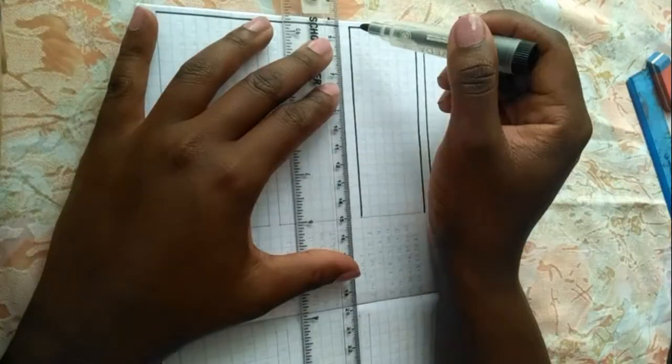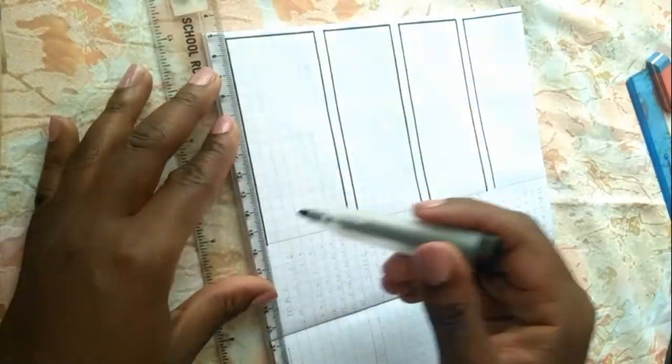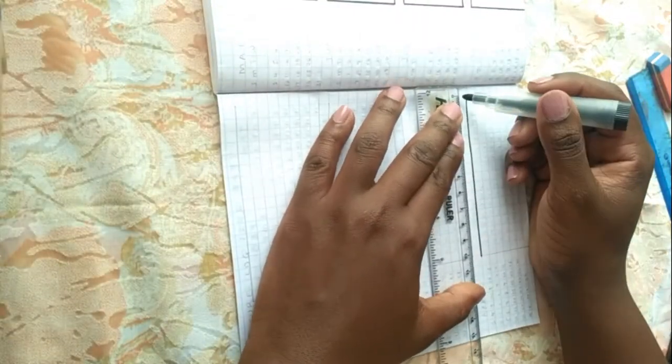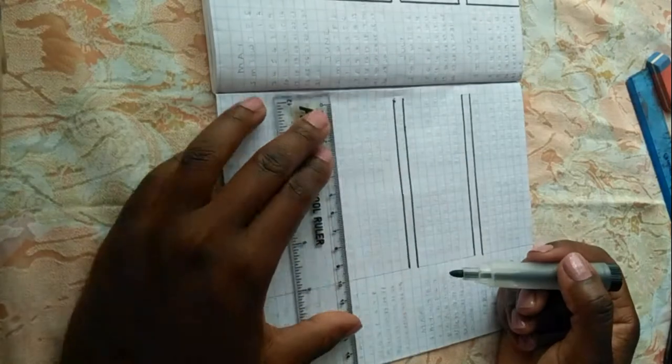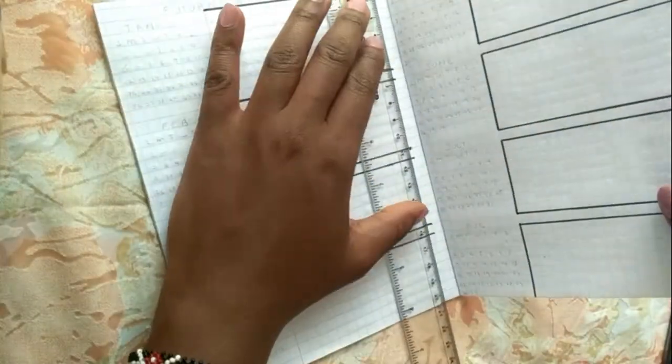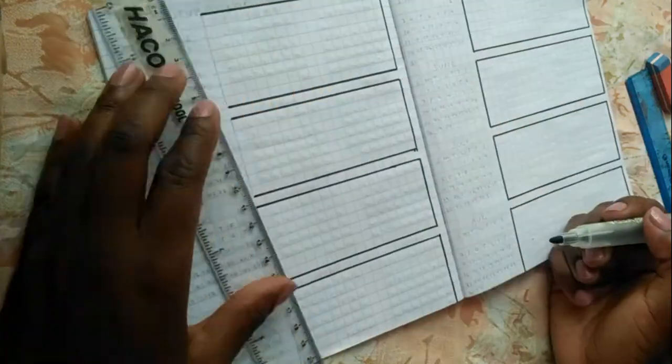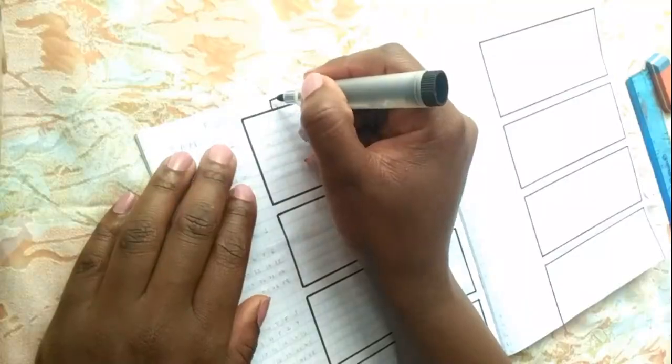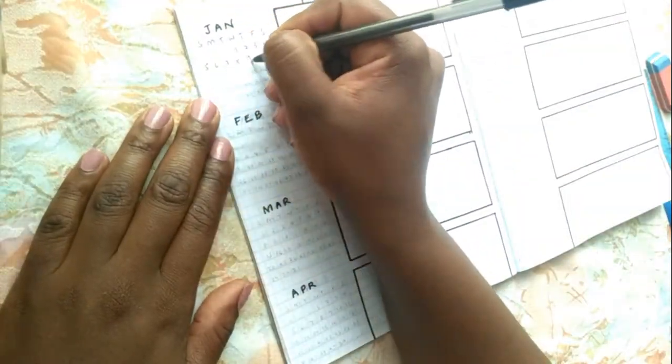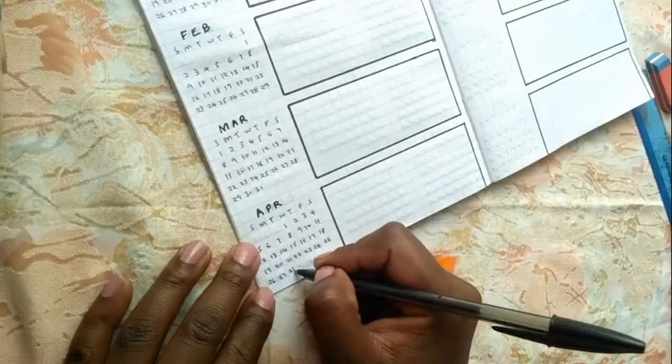The next three pages hold the future log and this goes by having four months spread out through the page where I have January to April, May to August and then September all the way to December and yeah after this I'm just placing the headers and have mini calendars on the side to keep track of all the dates.